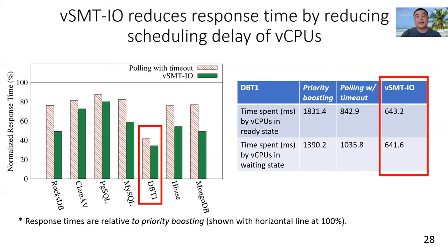We also notice that the time in the waiting state is also substantially reduced for DBT1. This is because finishing an IO operation sometimes needs the collaboration of multiple VCPUs in the VM. For example, after a VCPU sends out an IO request and becomes idle, another VCPU may receive the response and must notify the former VCPU by sending it an inter-processor interrupt.